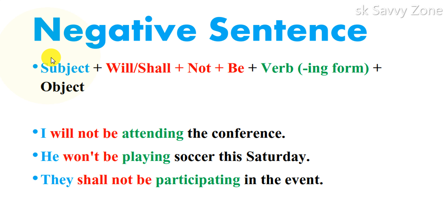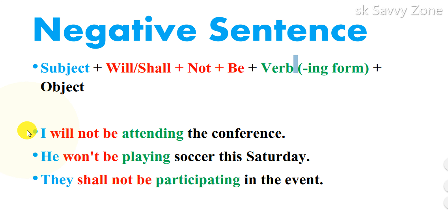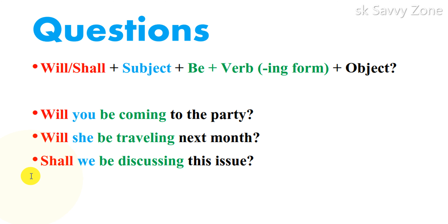The negative sentences in the future continuous tense follow the formula: Subject + will/shall + not + be + the -ing form of the verb. For example: 'I will not be attending the conference,' 'She won't be playing soccer,' and 'They shall not be participating in the event.'